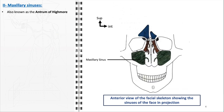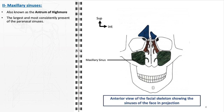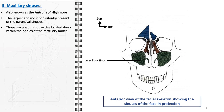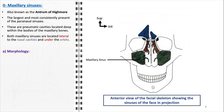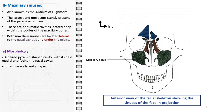The maxillary sinuses, also known as the antrum of Highmore, are a fundamental component of the paranasal sinus system. They hold the distinction of being the largest and most consistently present among the paranasal sinuses. These pneumatic cavities are situated deep within the bodies of the maxillary bones. Each maxillary sinus is located laterally to the nasal cavities and rests beneath the orbits. Morphologically, the maxillary sinuses are paired and possess a distinctive pyramid shape, with their base facing medially towards the nasal cavity. Each sinus comprises five walls and an apex.